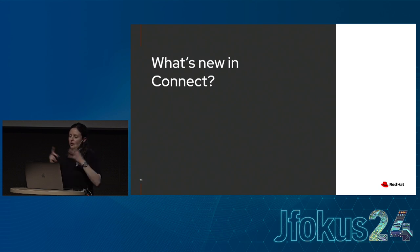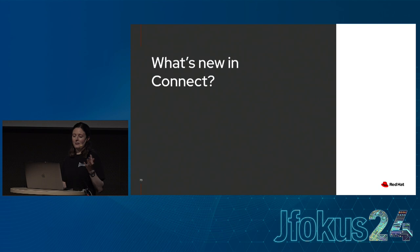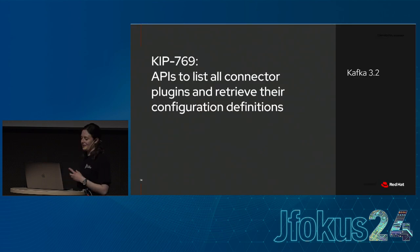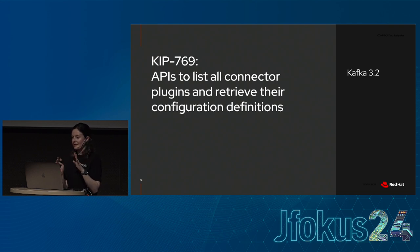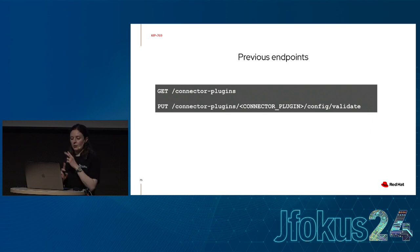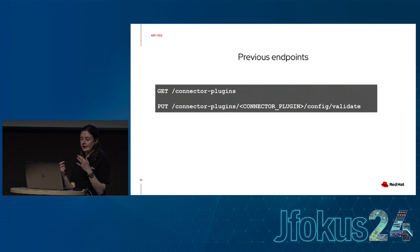Now let's talk about what's new in Connect. The first new feature is APIs to list all connector plugins and retrieve their configuration definitions. Previously, there were two endpoints: one to list connector plugins (but only connectors, not converters, predicates, or transformations), and one to validate configuration for a specific connector plugin. Every time I got a new connector, I had to construct what I thought the config was based on documentation, call the validate endpoint, and it would tell me what I forgot.